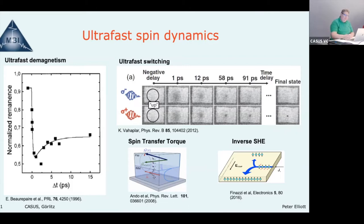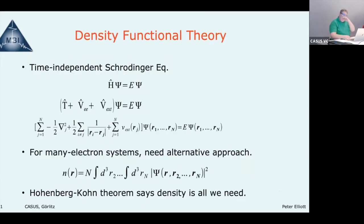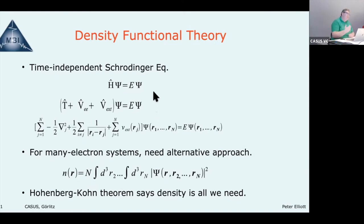I've put in a few slides to explain a little about DFT so everybody's on the same page. We start with the time-independent Schrödinger equation for electrons. We've already made many approximations — things like the Born-Oppenheimer approximation, we've neglected spin, and we're non-relativistic. We'll put some of that back in later, but for thinking about DFT we can just take this Hamiltonian.